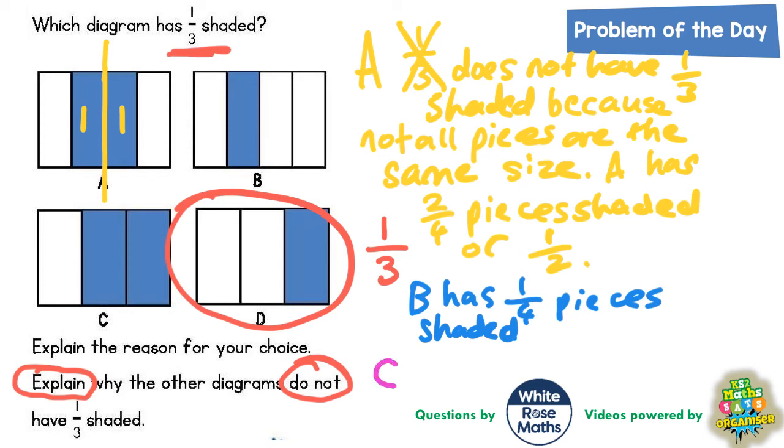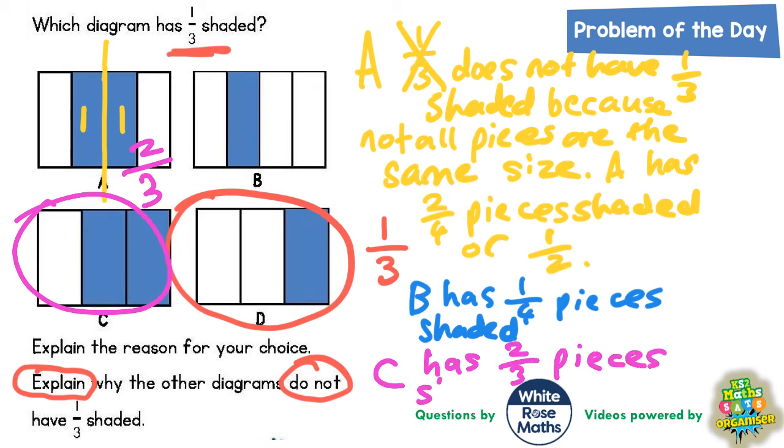C is an easy one to explain as well because if you look at C there is actually only three pieces altogether and two of them are shaded. So that makes C having two out of three pieces shaded which is two thirds, and the question asks about one third.